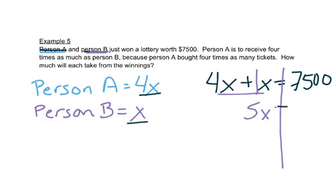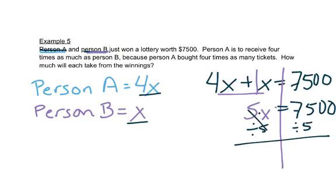Keep our equal sign on top of our line. 7,500. Then this is multiplication, so we'll divide both sides by 5. Five leaves me with X over here, and 7,500 divided by 5 equals 1,500.